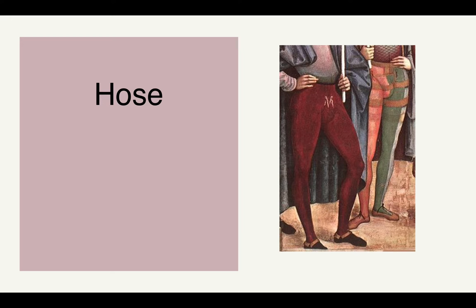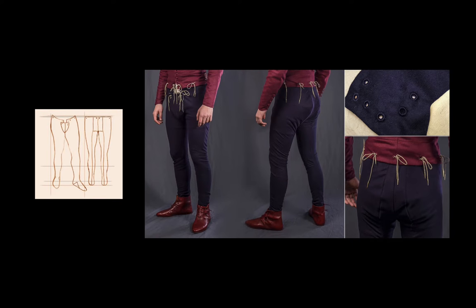We continue to see hose in this period, though the shaping and function changes a little. Rather than being two separate items worn on each leg, they've now been pieced together and sewn at the back of the crotch. To hold them up, it's common to see them attached to the bottom of a doublet with ties. Most of the fabrics used to create this garment were woven and cut on the bias — cut diagonally to the fabric's grain — which permits a little more stretch. They could also be multicolored or patterned, referred to as parti-colored (P-A-R-T-I colored).